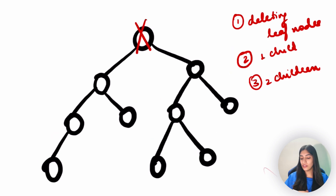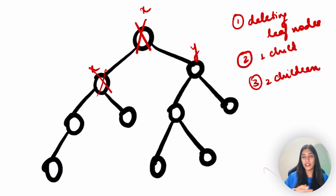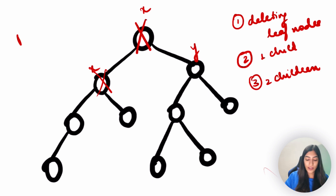Let's take another case: suppose I had to delete the root node itself. This is very complicated - there is an entire left subtree and an entire right subtree. Suppose this value is x and the child is y. I can't just assign a child to x and then delete - it becomes very complicated.